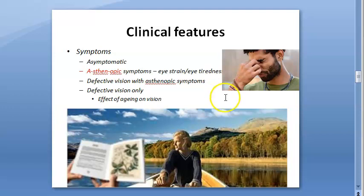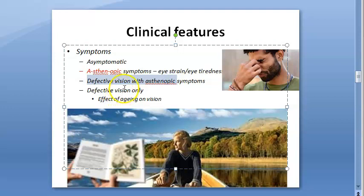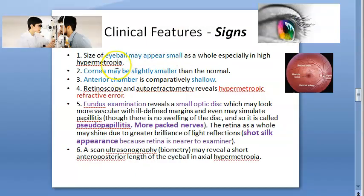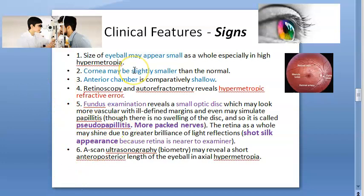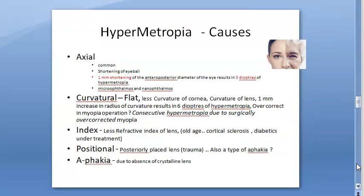Clinical features of hypermetropia: patients may be asymptomatic or have asthenopic symptoms — eye strain, eye tiredness, defective vision. Signs: small eyeball, small cornea, shallow anterior chamber, hypermetropic refractive error. Fundus shows pseudopapillitis and short silk appearance — remember these two findings.